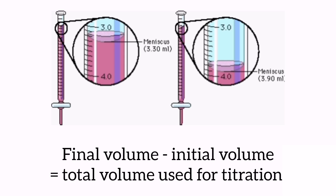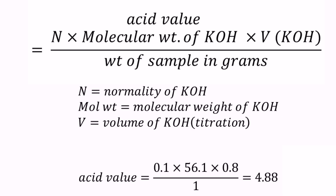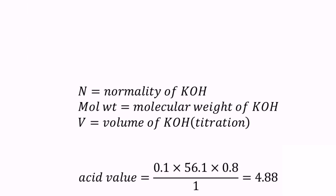Let us do calculations of the observed readings. Acid value is determined by the formula: N is the normality of potassium hydroxide solution, B is the volume of potassium hydroxide used to neutralize. The molecular weight of potassium hydroxide is 56.1.